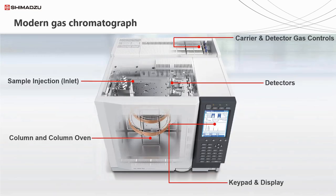Here's what a modern GC would actually look like. Inside the GC oven, we can see our column or columns. The GC is typically controlled by a keypad or display on the front, although many are now controlled by a PC remotely. The sample injection inlet and the GC detectors are usually in the roof of the GC. The carrier gas controller - the step-down flow controller - is typically located in the back of the GC.